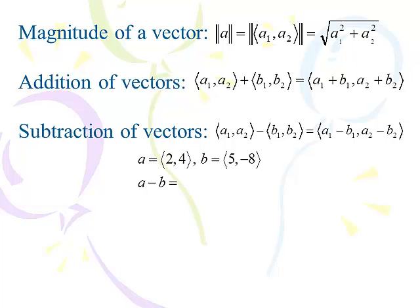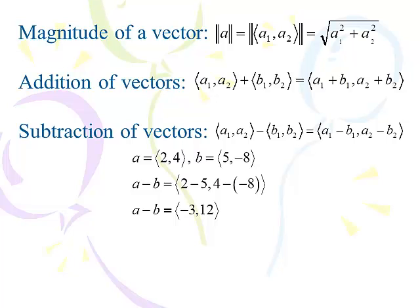Subtraction is the opposite of addition. Instead of adding the x's, we subtract the x's, and instead of adding the y's, we subtract them. For vectors (2, 4) and (5, -8): 2 minus 5 is negative 3, and 4 minus negative 8 is positive 12. So negative 3, 12 is the result. Note that whereas addition of vectors produces the resultant vector, subtraction does not.